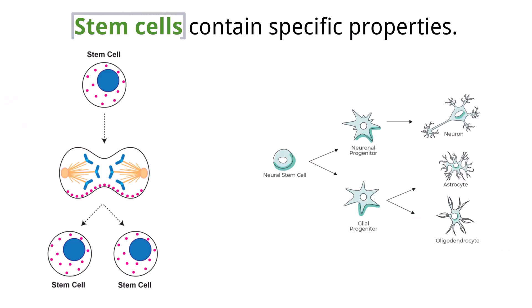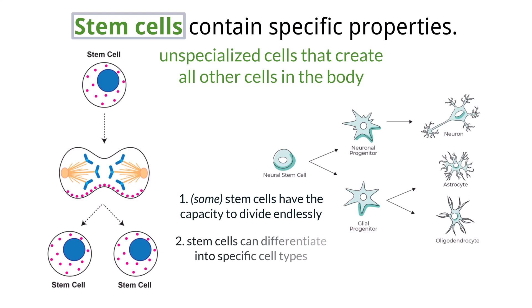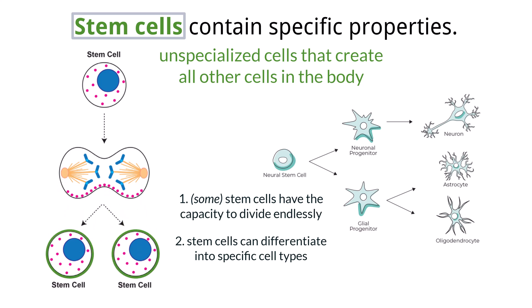Stem cells are unique in the sense that they are the precursor cells that create all other cells within the human body. There are two unique properties of stem cells you need to know, which include their capacity to endlessly divide and their capacity to differentiate along different pathways. Stem cells can, theoretically, continue to divide through the process of mitosis endlessly, which creates more identical stem cells. This is important during embryonic development as the early formations of tissues and organs are built, but also for adulthood because cells in your body are constantly dying and need to be replaced, and that replacement could come from a stem cell.